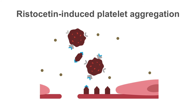In von Willebrand's disease there is reduced aggregation of platelets with high dose ristocetin, while the low dose is not affected. However, in subtype 2B, platelet aggregation is observed even with a low dose of ristocetin. This is because in type 2B the von Willebrand's factor has increased affinity for platelet GP1B, and even a small dose of ristocetin is enough to cause aggregation.